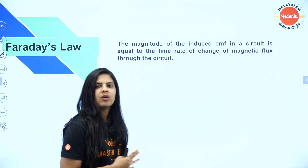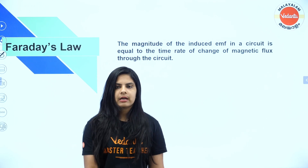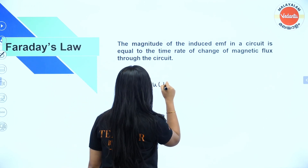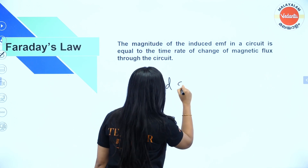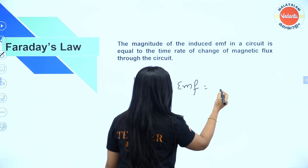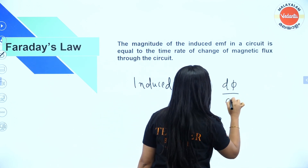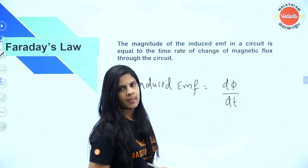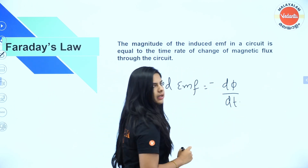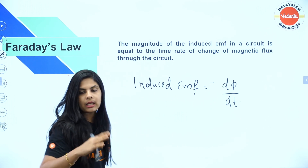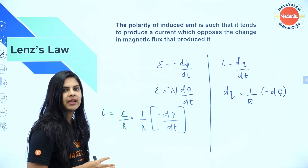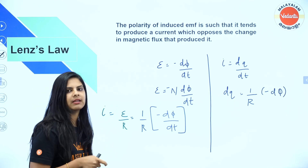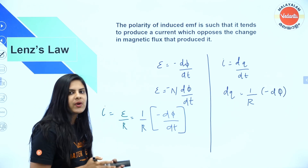Next, there is a law called Faraday's law, which is about induced EMF. Induced EMF is equal to the rate of change of flux with respect to time. There is a minus sign in this equation, and the clarity of that minus sign comes from Lenz's law — the minus sign means the induced effect is opposite.